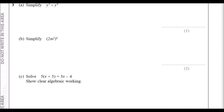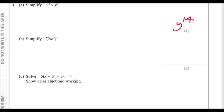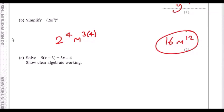Number three, part a: simplify y⁵ × y⁹. When multiplying, just add the powers: 5 + 9 = 14, giving y¹⁴. Part b: simplify (2m³)⁴. Apply the power 4 to both: 2⁴ = 16 and m³ becomes m^(3×4) = m¹². So the answer is 16m¹².